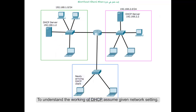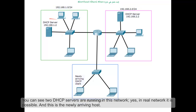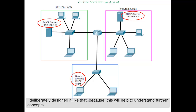To understand the working of DHCP, assume the given network setting. There are three network segments — green, pink, and blue — and these are the network addresses of each. You can see two DHCP servers are running in this network. Yes, in a real network this is possible. This is the newly arriving host. I deliberately designed it like that because this will help to understand further concepts.